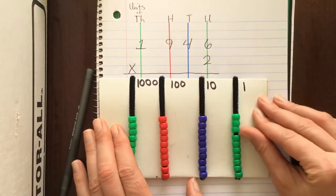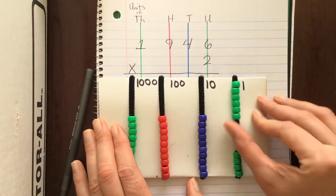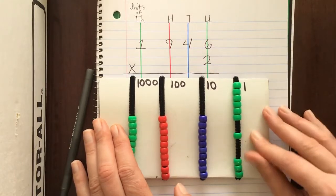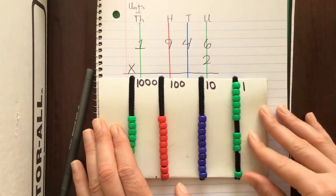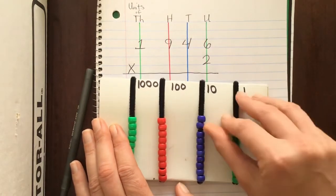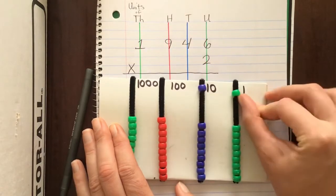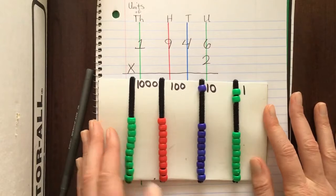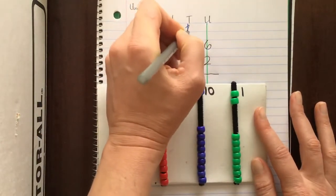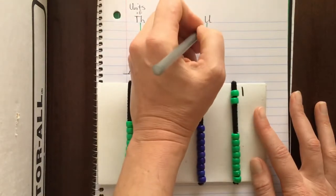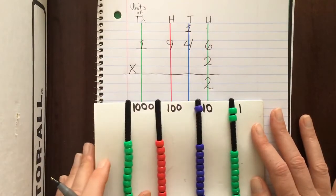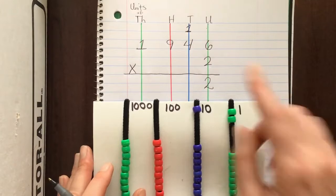So I had six, and I need to count out six again because the multiplier tells us to do that twice: one, two, three, four — I'm going to exchange — five, six. Now we're going to record that exchange. We have one ten up here that we exchanged, and we have two units, or two ones, and we'll write that down.